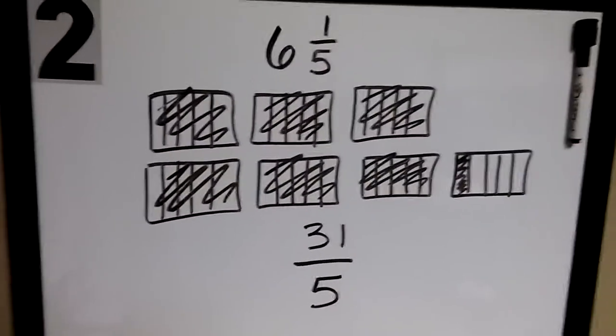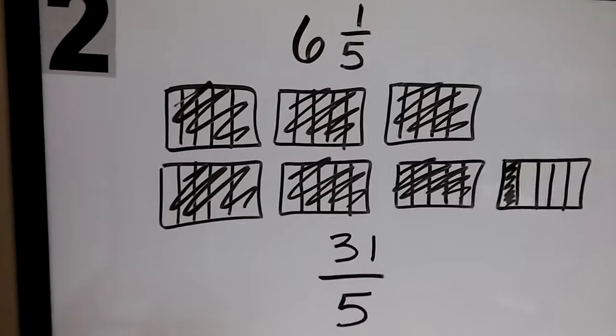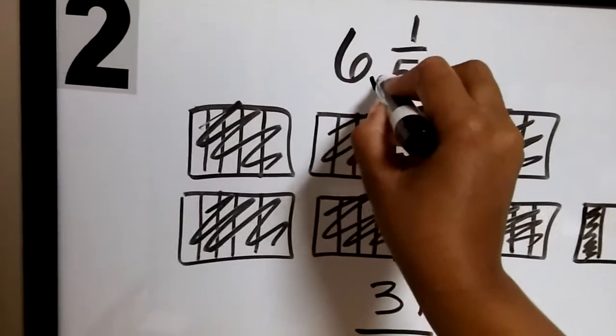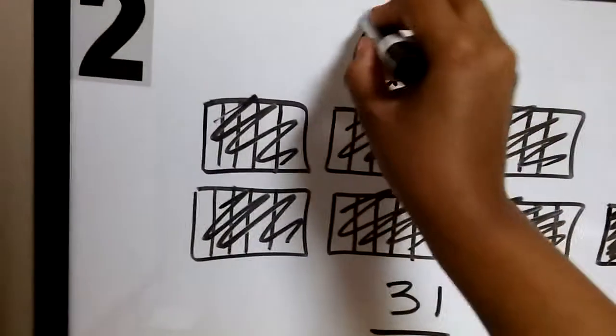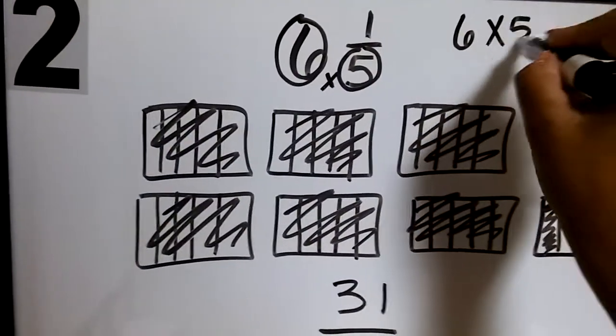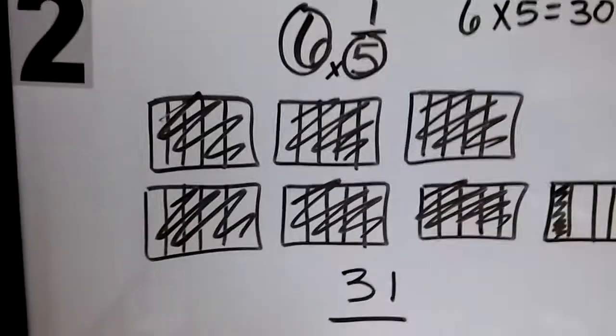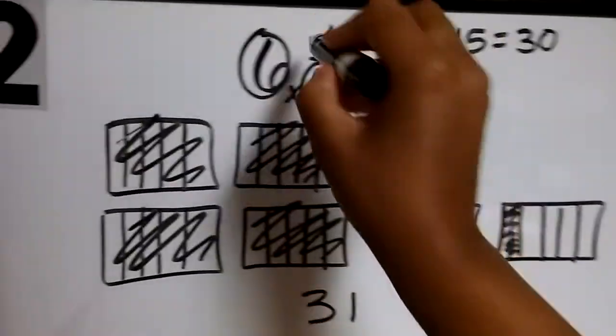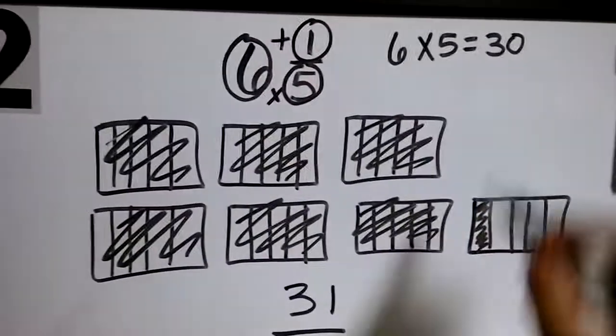Now, an easier way I could have done this using calculation is multiplying the denominator and the whole number.